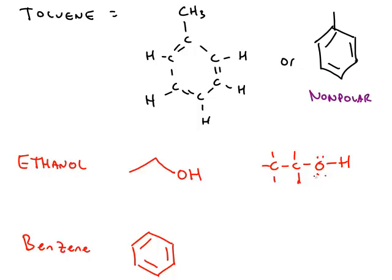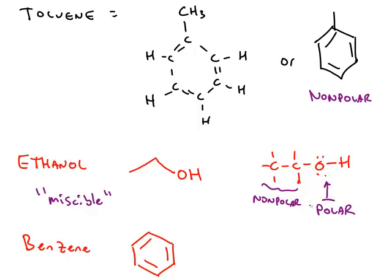Ethanol does dissolve in water. Here's the bond line formula for ethanol and the Lewis structure. Notice it has a very similar structural feature as water — where this part of ethanol is polar, and the carbon and hydrogen end is nonpolar. Experimentally, any amount of ethanol completely dissolves in any amount of water. Those two chemicals are called miscible. The polar part of the ethanol is overwhelming the nonpolar part, and ethanol dissolves completely in water.